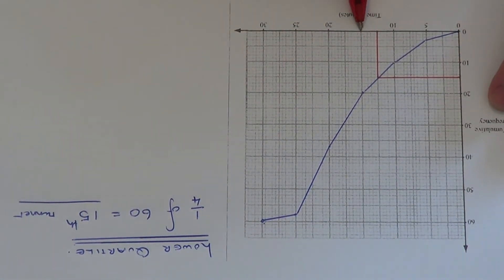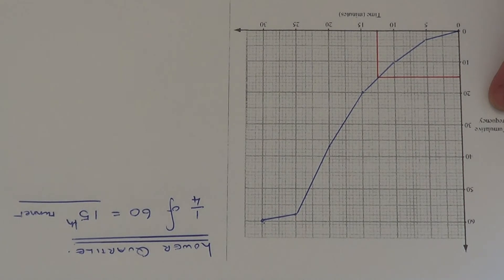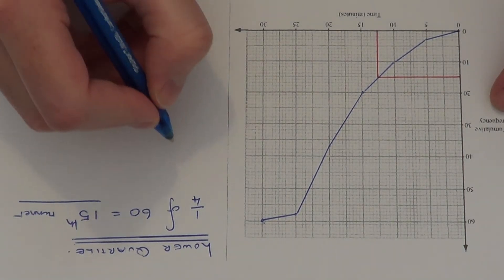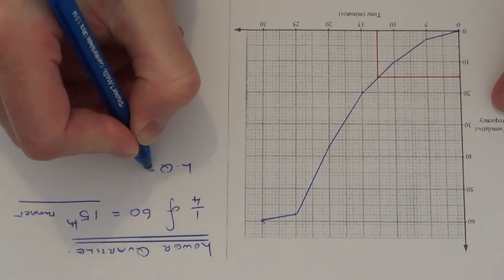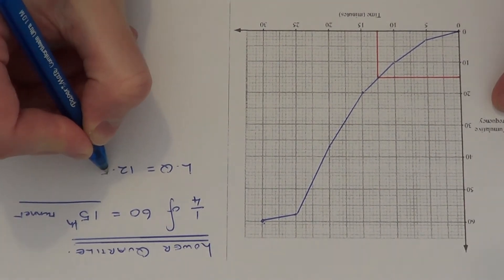As you can see it's halfway between the 10 and the 15. So the 15th runner did it in a time of 12.5 minutes. And that is your lower quartile.